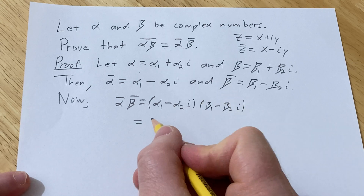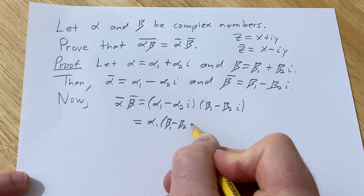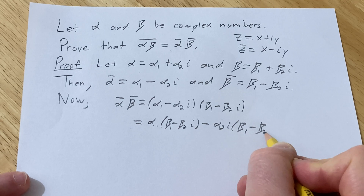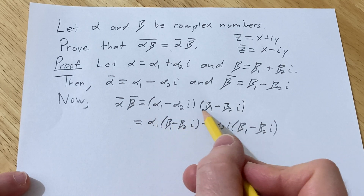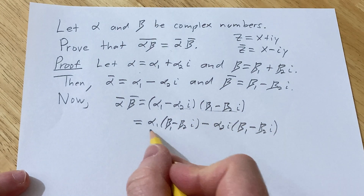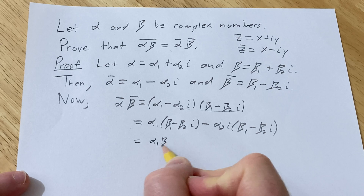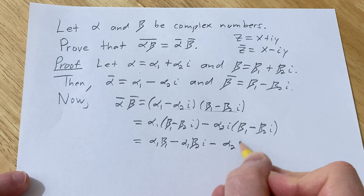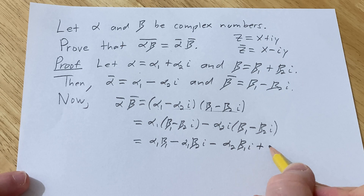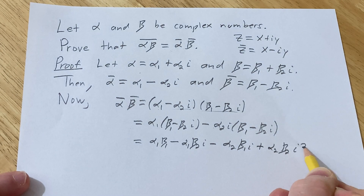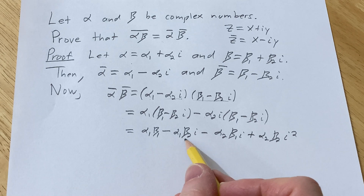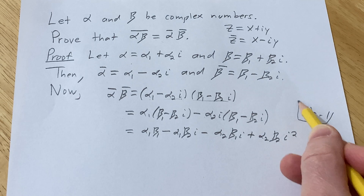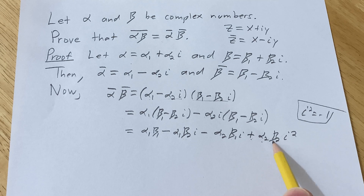Using the distributive property: alpha₁ times all of this, minus alpha₂·i times all of this. Distributing gives us alpha₁·beta₁ minus alpha₁·beta₂·i, minus alpha₂·beta₁·i, plus alpha₂·beta₂·i². Nothing fancy here, just applying the distributive property.